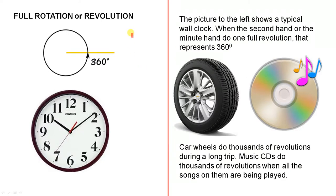Now we have the full rotation or revolution which we did mention. Remember that goes around and it forms a full circle. The picture to the left shows a typical wall clock. Here it is here. When the second hand or the minute hand do one full revolution, that represents 360 degrees.